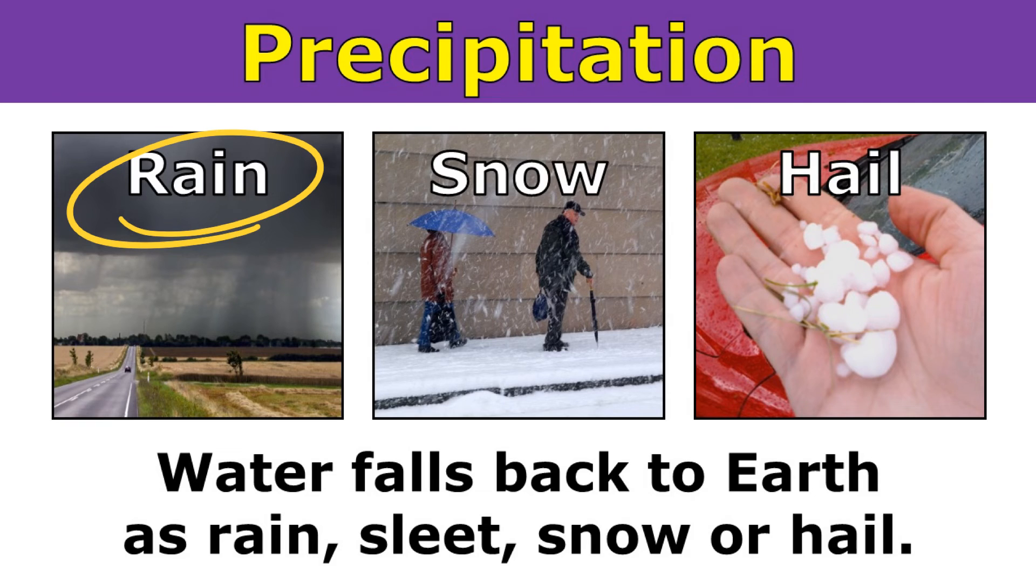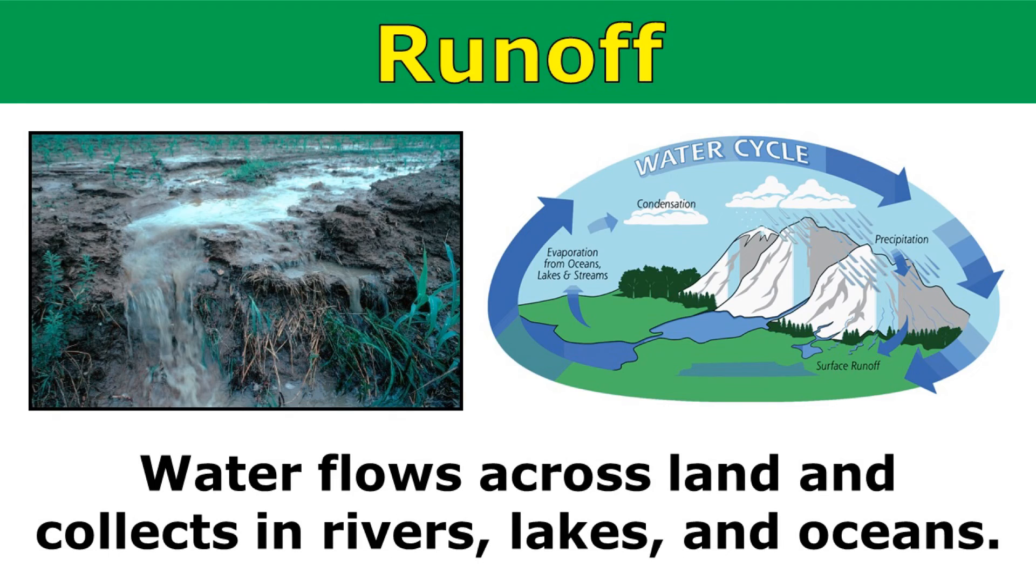But sometimes the water freezes before it falls back to earth. And that's how we get sleet, snow, or hail. And runoff occurs as water flows across land and collects back in rivers, lakes, and oceans.